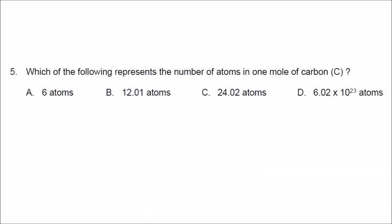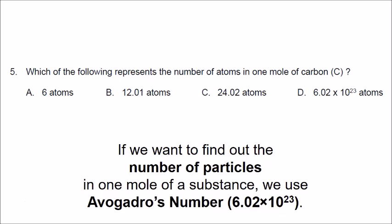Number 5 is a multiple-choice question, but they are not talking about mass — they are talking about the number of atoms in one mole of carbon. For the number of particles in one mole, we use Avogadro's number. So the correct answer to number 5 is D.